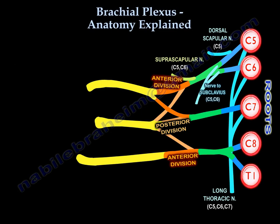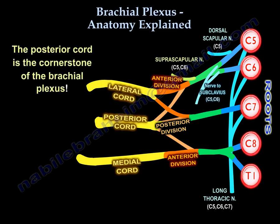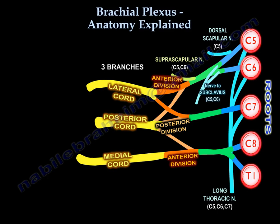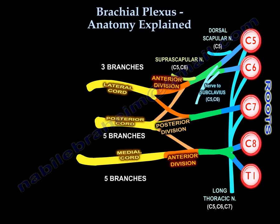After the divisions, we have the cords. The posterior cord is the cornerstone because it takes all three posterior divisions and joins them into one cord. The lateral cord gives three branches, the posterior cord gives five branches, and the medial cord also gives five branches.